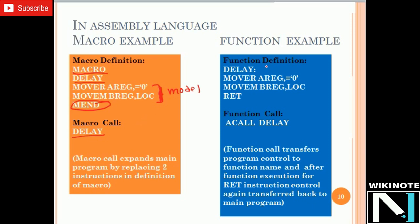Now we will go for a function example. We write the function name, followed by the model statements, and every function ends with RET. When calling a function, we use a CALL instruction. When the function is called, control transfers to the delay subroutine, which executes the model statements. On the RET instruction, control returns to the next line of the program. That is how a function works.